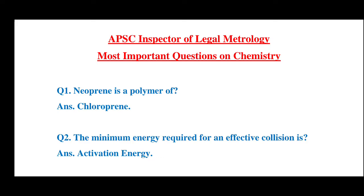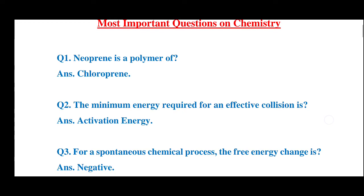Neoprene is a polymer of — what is the polymer of neoprene? The answer is chloroprene. Neoprene is a polymer of chloroprene. Question number 2: The minimum energy required for an effective collision is —